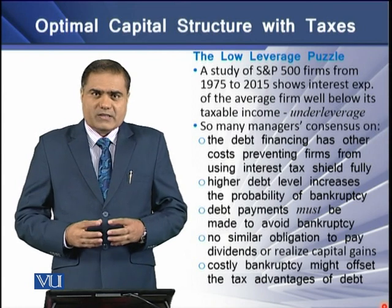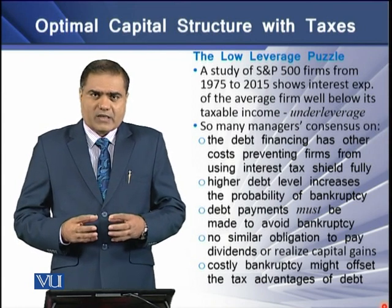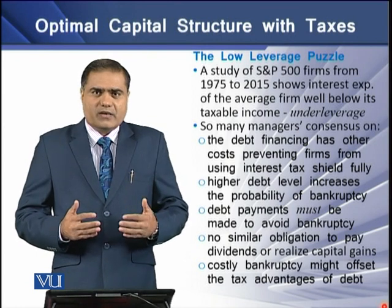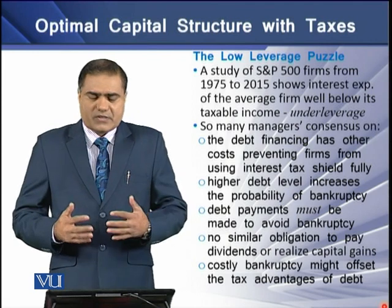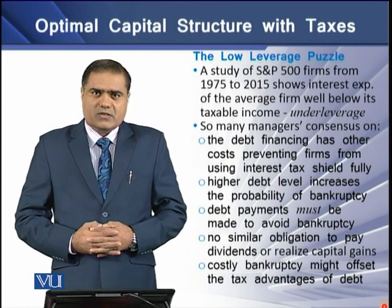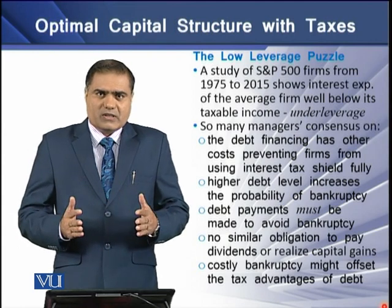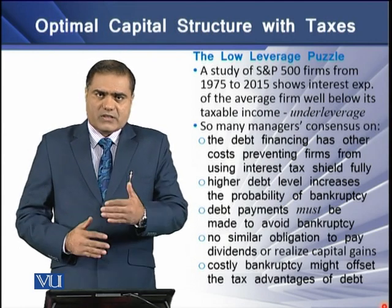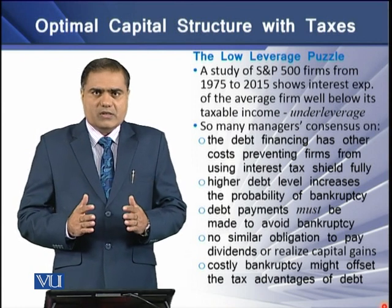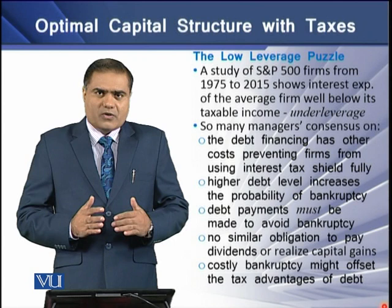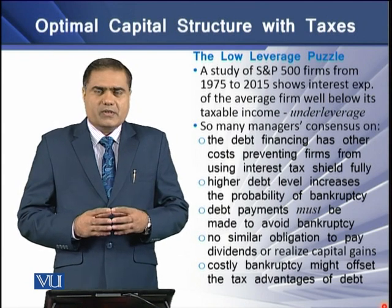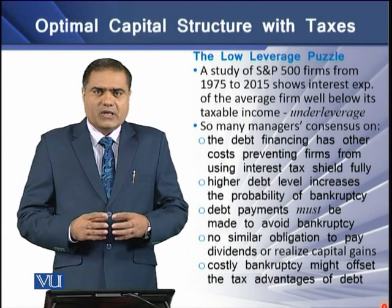Higher debt levels increase the probability of bankruptcy, and debt payments must be paid to avoid bankruptcy — meaning interest and principal payments are a legal obligation of the firm, whereas paying dividends is not a legal obligation to equity holders. Costly bankruptcy may offset the tax advantages of debt. In solving this low-leverage puzzle, the probability and riskiness of bankruptcy is the main cause preventing firms from using debt at full capacity, because the cost of bankruptcy may exceed the tax benefit of debt.